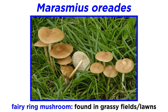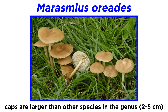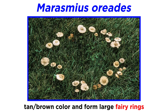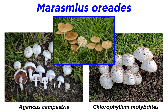Marasmius oreades, commonly called the fairy ring mushroom, is found in grassy fields and lawns. This mushroom can be larger than most other Marasmius species, with caps ranging from two to five centimeters in diameter. They are tan to brown colored and are known to form large fairy rings in the grassy areas they inhabit. They are commonly confused with other larger species, like the meadow mushroom, Agaricus campestris, and Chlorophyllum molybdites, mushrooms we discussed in the tutorial on Agaricaceae.